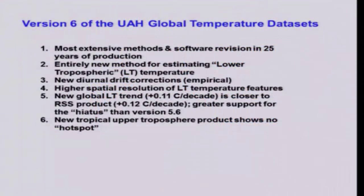Our new trend — and this was unexpected — ended up actually being a little below the RSS trend since 1979. We get 0.11°C per decade since 1979, which is really close to Remote Sensing Systems' product. We've cooled the latter half of the record; it's just the way it turned out with all the adjustments, actually bringing us into very close agreement with RSS, which we didn't expect.